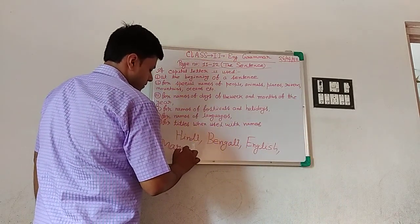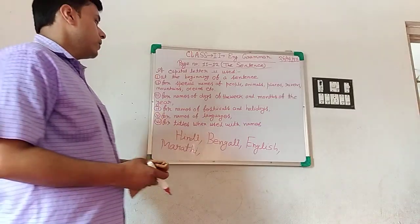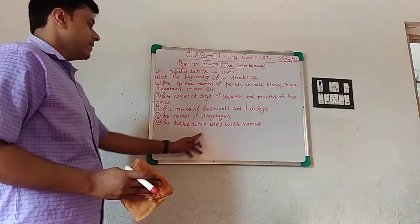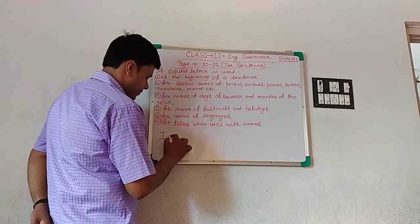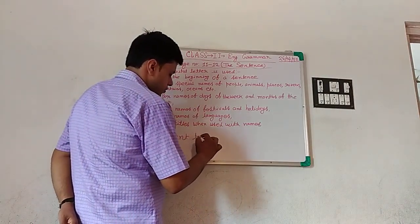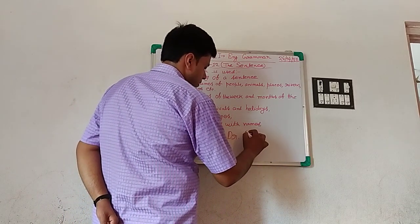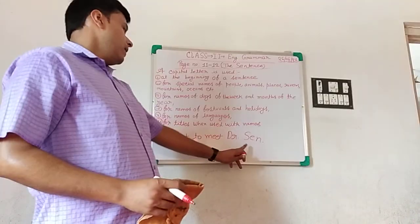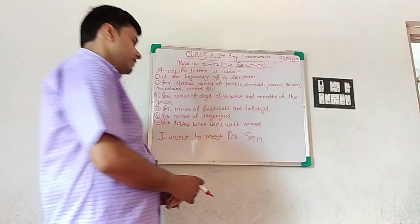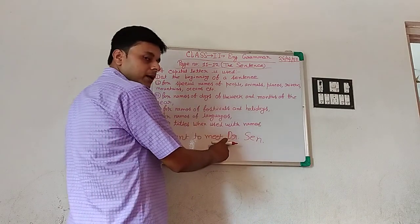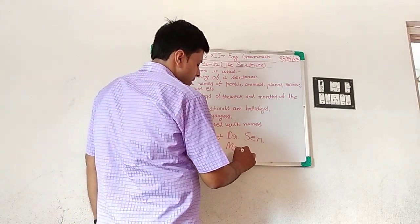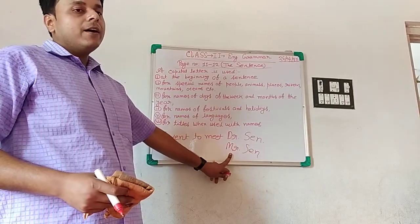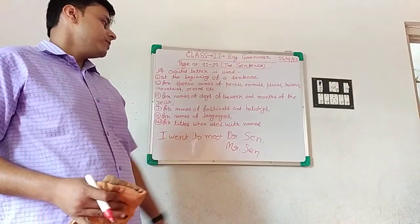And the last point: capital letters are used for titles used with names. For example, 'I went to meet Dr. Sen.' Mr. Sen is a doctor and the title is Dr. Sen. A title is a symbol of honour for a person. Mr., Dr. — always use a capital letter for titles.